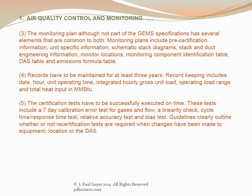Records have to be maintained for at least three years. Record keeping includes date, hour, unit operating time, integrated hourly gross unit load, operating load range, and total heat input in MMBTUs. The certification tests have to be successfully executed on time. These tests include a seven-day calibration error test for gases and flow, a linearity check, cycle time response time test, relative accuracy test, and bias test. Guidelines clearly outline whether or not recertification tests are required when changes have been made to equipment, location, or the DAS.